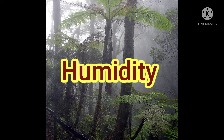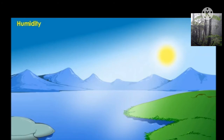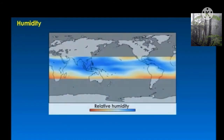Humidity: the amount of water vapor or moisture present in a given volume of air is termed as humidity. It helps in cooling and heating of the atmosphere. The actual amount of water vapor in a given volume of air is known as absolute humidity. The ratio between the actual amount of water vapor present and the water vapor the same volume of air can contain till its saturation level is called relative humidity.